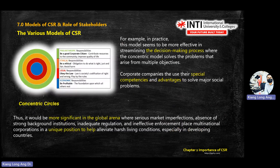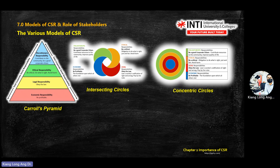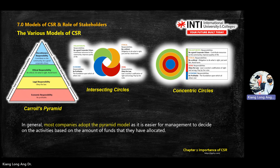The concentric model is often seen in the context of developing and developed countries — developed countries help undeveloped countries and they name that process CSR. So we have three types of shapes: pyramid, intersecting circle, and concentric. Most companies adopt the first one — pyramid — because it has a hierarchy of priorities and is easier to make decisions. These three shapes also help you when you do your group report — discuss the type of CSR model inside the report.